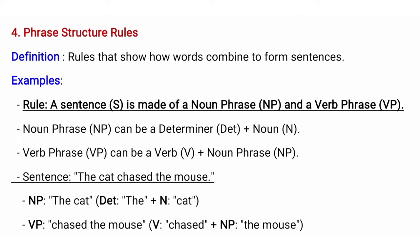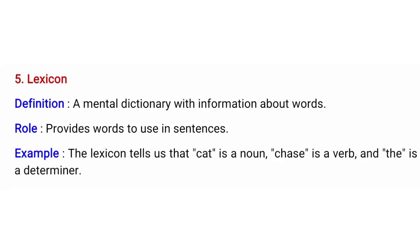Moving to the word lexicon: a lexicon is a mental dictionary with information about words and their roles, providing words to use in sentences. For example, the lexicon tells us that 'cat' is a noun, 'chase' is a verb, and 'the' is a determiner. This is information about words according to our mental dictionary.